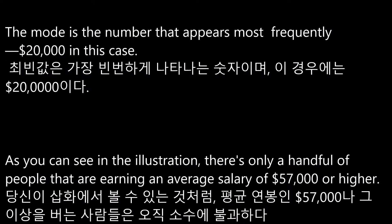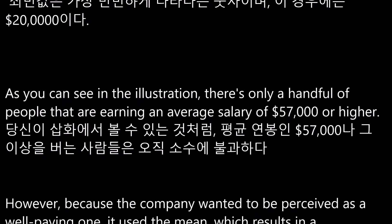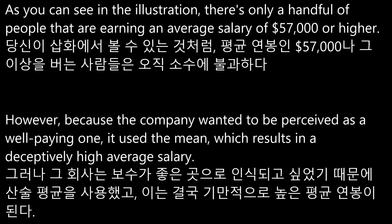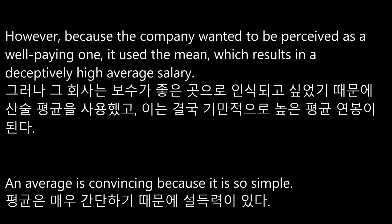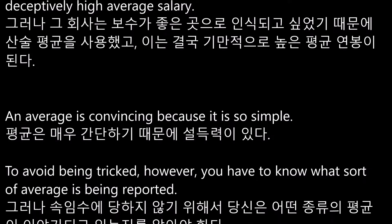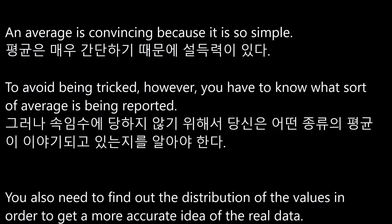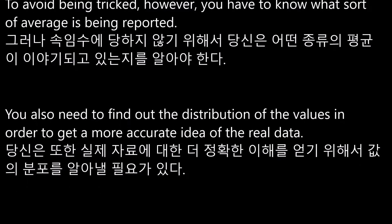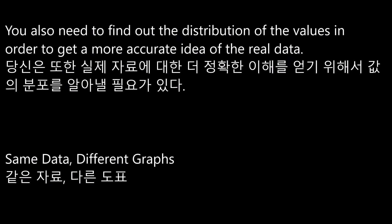As you can see in the illustration, there's only a handful of people earning an average salary of $57,000 or higher. However, because the company wanted to be perceived as a well-paying one, it used the mean, which results in a deceptively high average salary. An average is convincing because it is so simple. To avoid being tricked, you have to know what sort of average is being reported. You also need to find out the distribution of the values in order to get a more accurate idea of the real data.